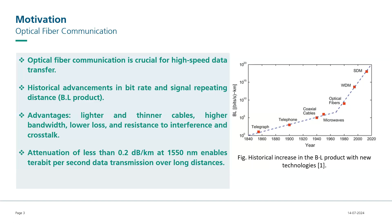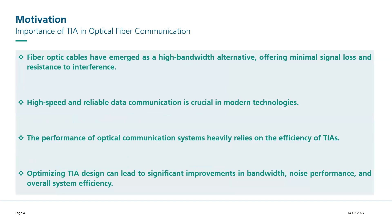Optical fiber cables are not only lighter and thinner than traditional electrical wiring, but also offer higher bandwidth, lower loss, and resistance to electromagnetic interference and crosstalk. With an attenuation of less than 0.2 dB per kilometer at the emission wavelength of 1550 nanometers, these fibers enable data transmission at terabits per second speed over thousands of kilometers, making them indispensable in modern communication systems. High-speed and reliable data communication is very crucial in modern technologies. In all these systems, the performance of optical communication devices is very largely dependent on the efficiency of transimpedance amplifiers. By optimizing TIA design, we can achieve significant improvements in bandwidth, noise performance, and overall efficiency, thereby enhancing the capabilities of these communication systems.